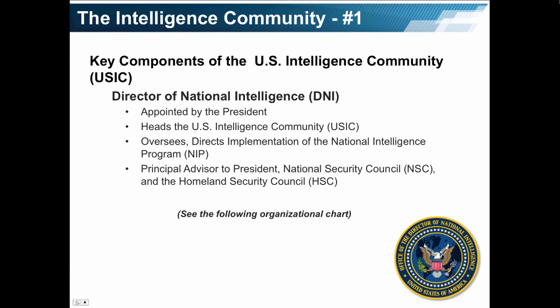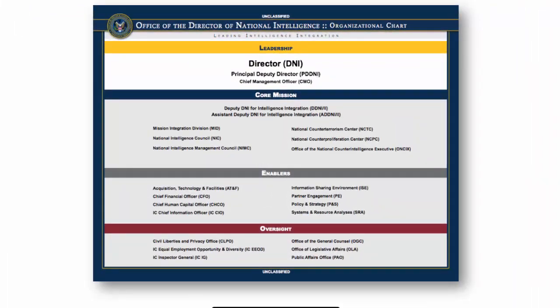We focus first on the Director of National Intelligence, the DNI. The DNI is appointed by the President, heads the U.S. intelligence community as a whole, oversees and directs implementation of the National Intelligence Program, the NIP, and is a principal advisor to the President, along with the National Security Council and the Homeland Security Council. Here is an organizational chart of the Office of the DNI.